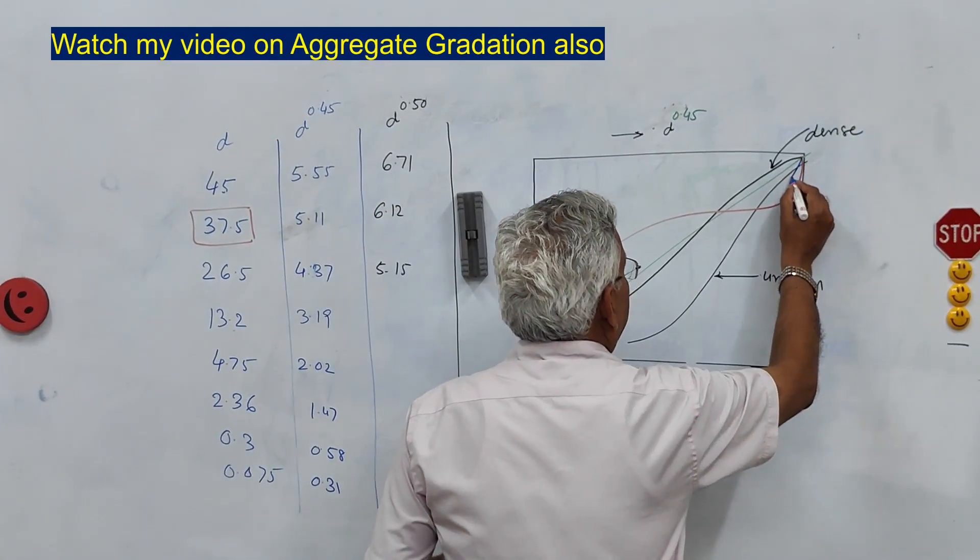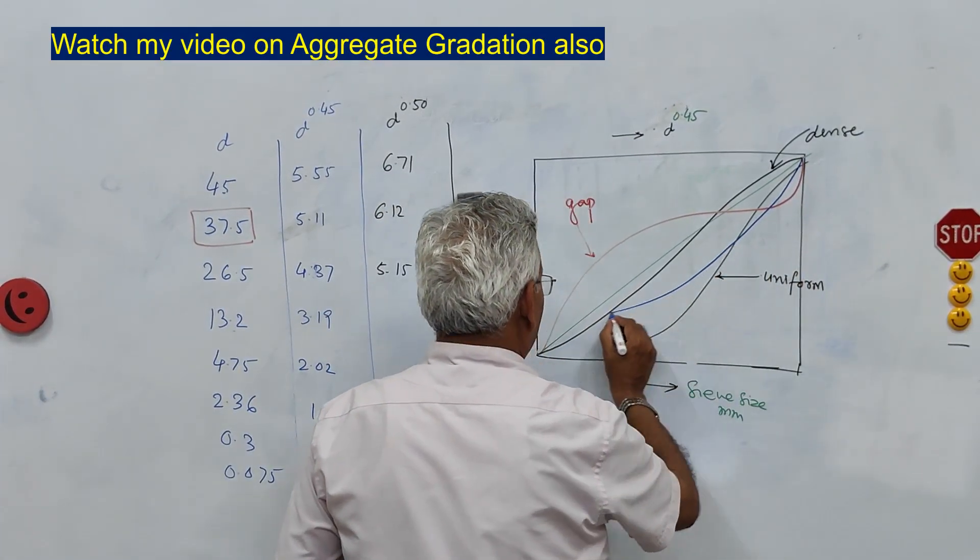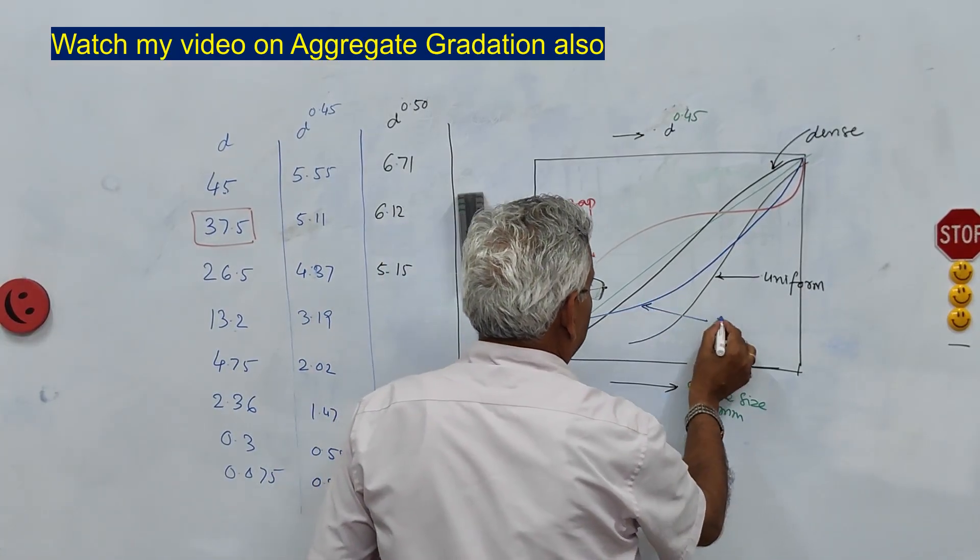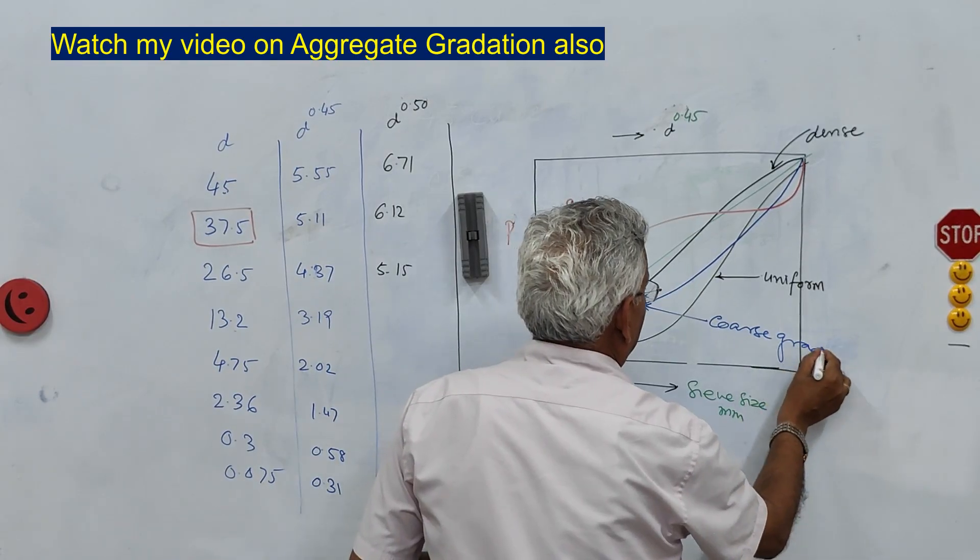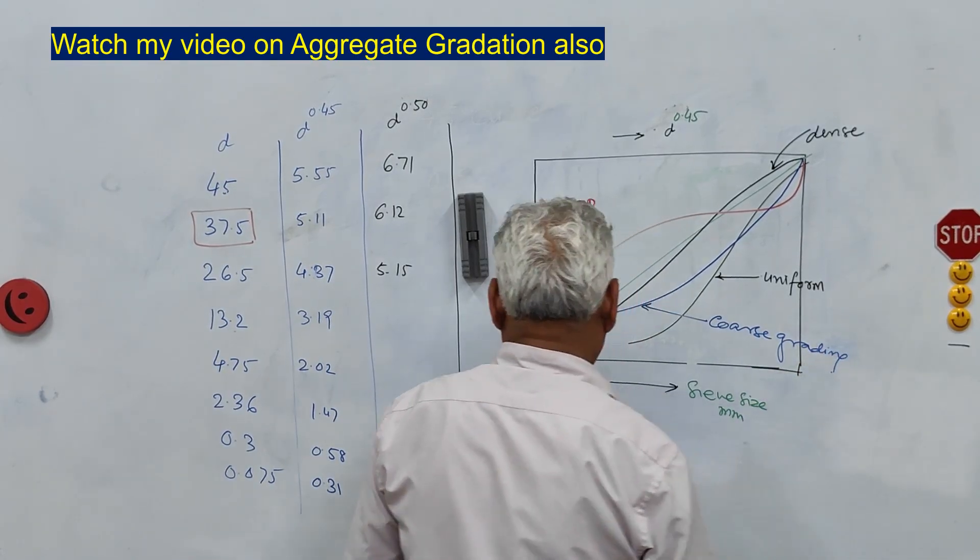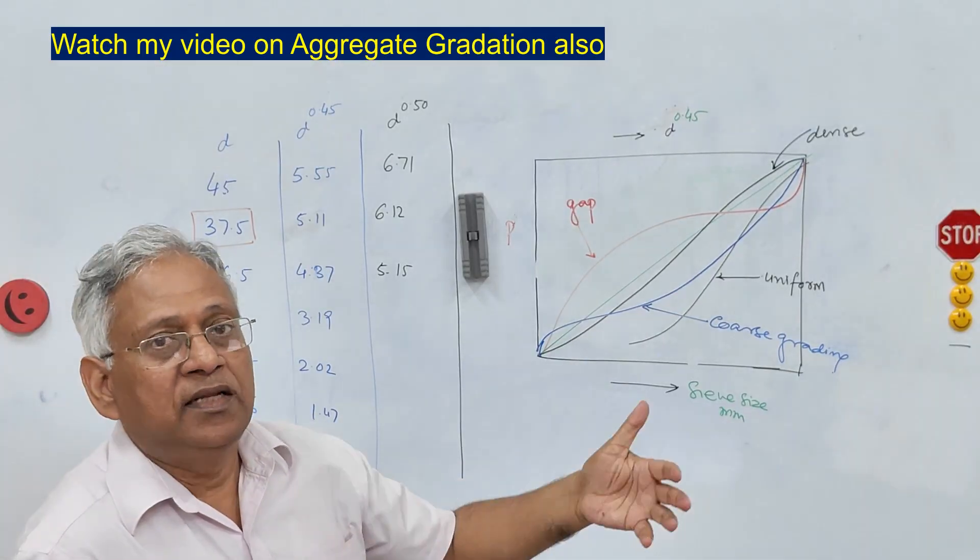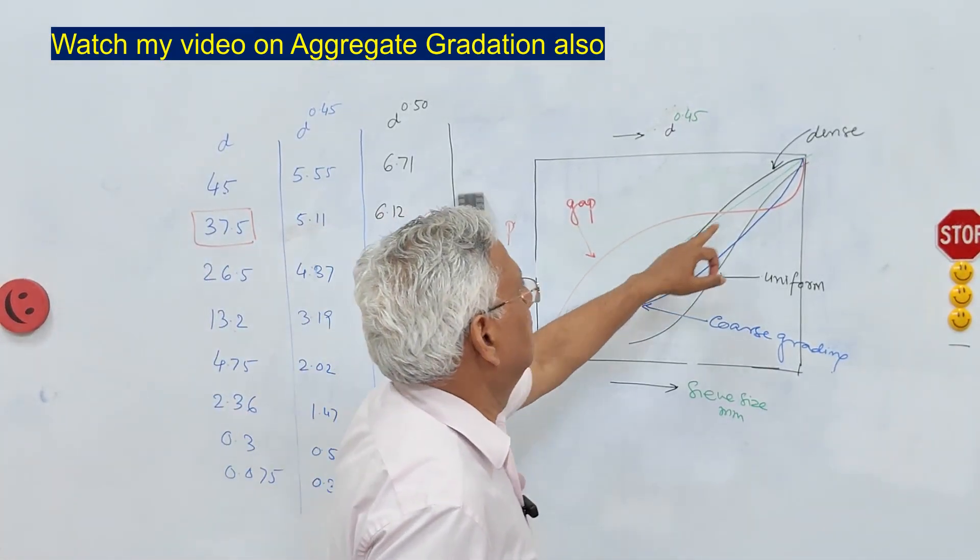And this grading which is consistently below this is a coarse grading. So this is how different types of grading compare with the maximum density line.